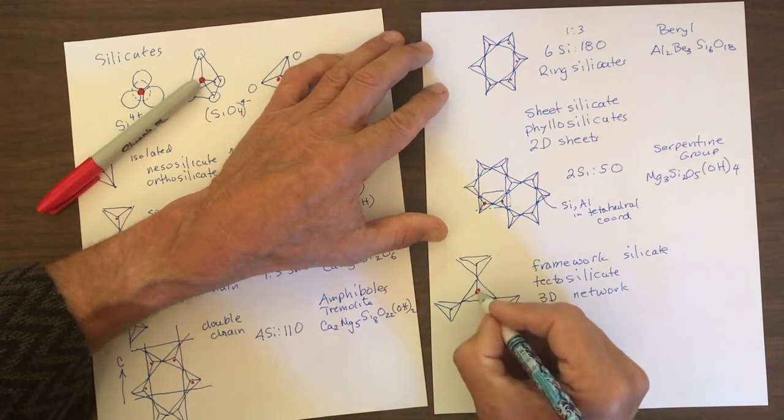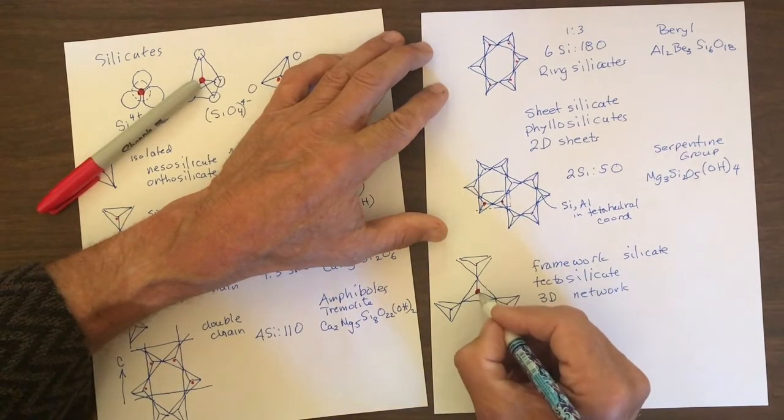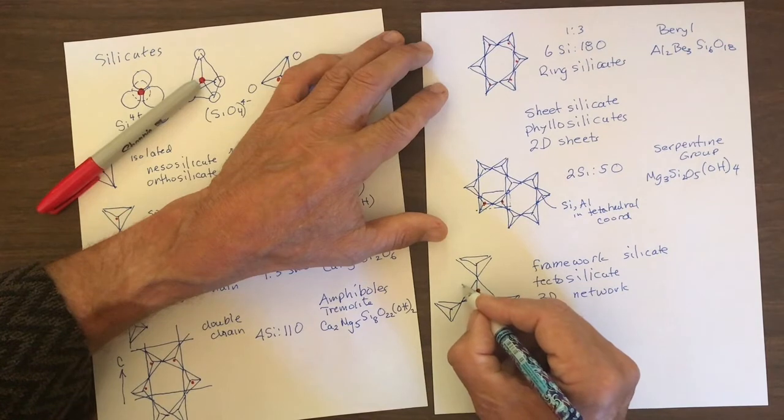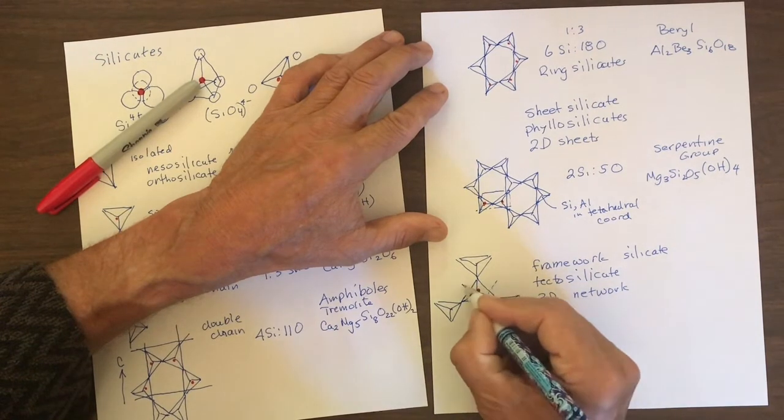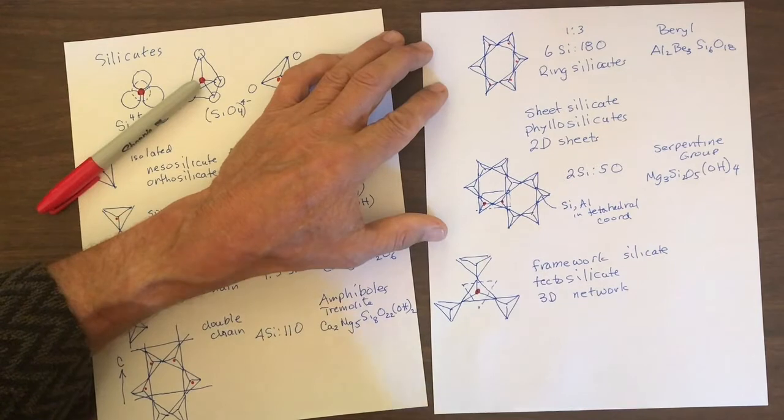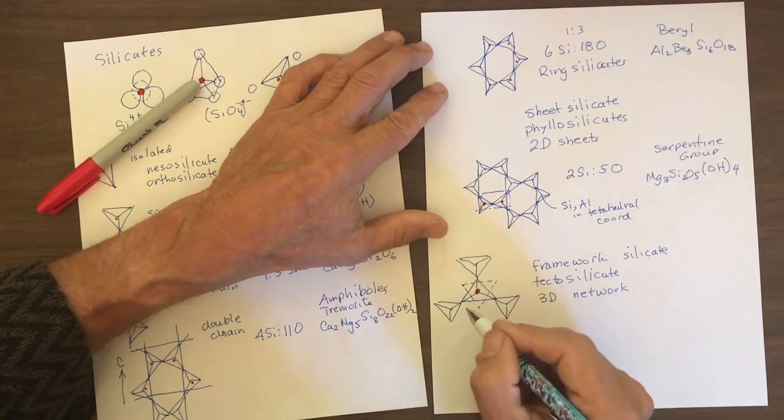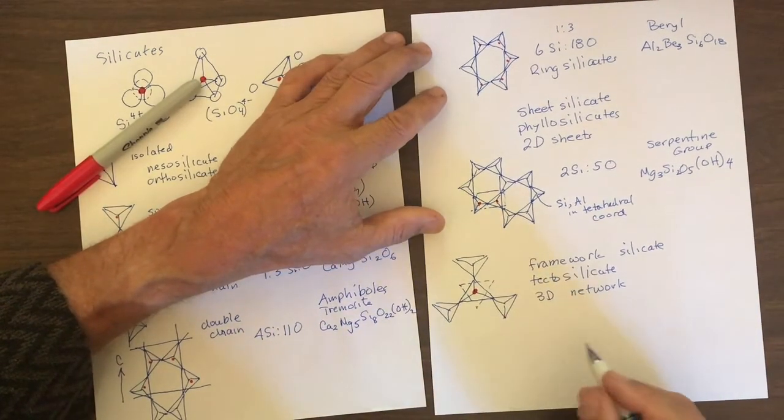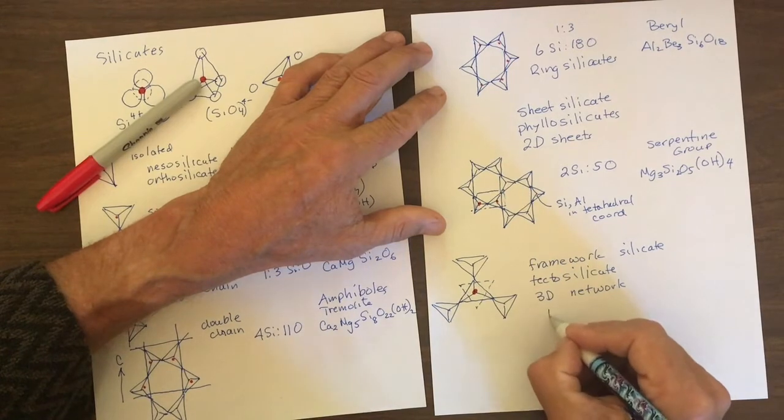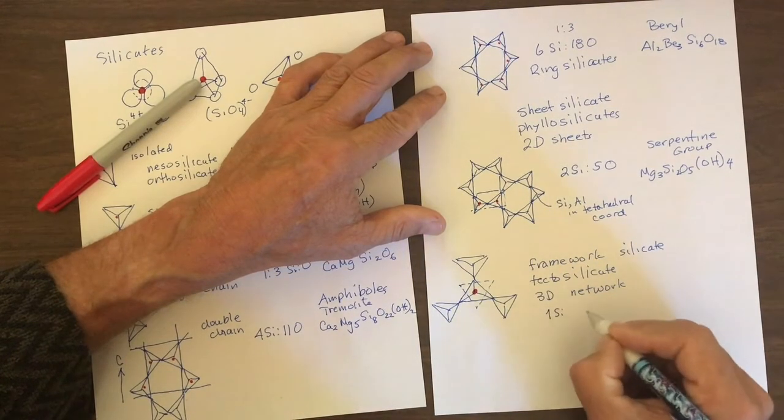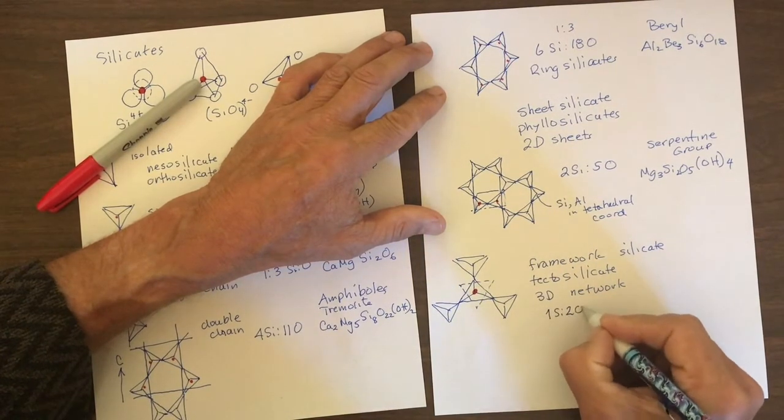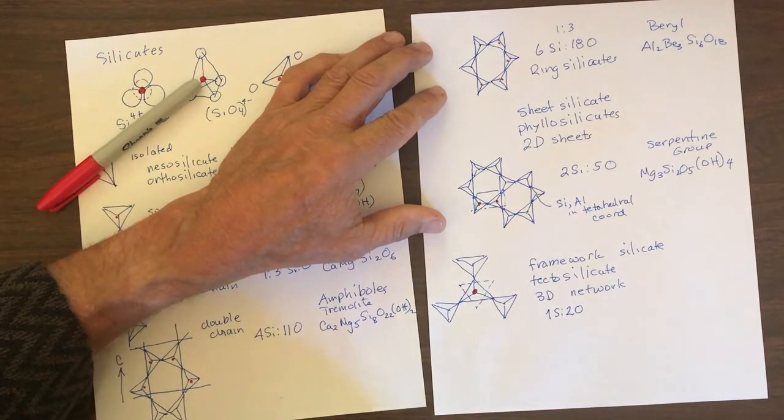In addition, the apex of this tetrahedra shares its oxygen with an overlying tetrahedra. Okay. So that means that every one of the oxygens is shared between two silica tetrahedrons. So we have one silica shared with two oxygen, and that's the stoichiometry.